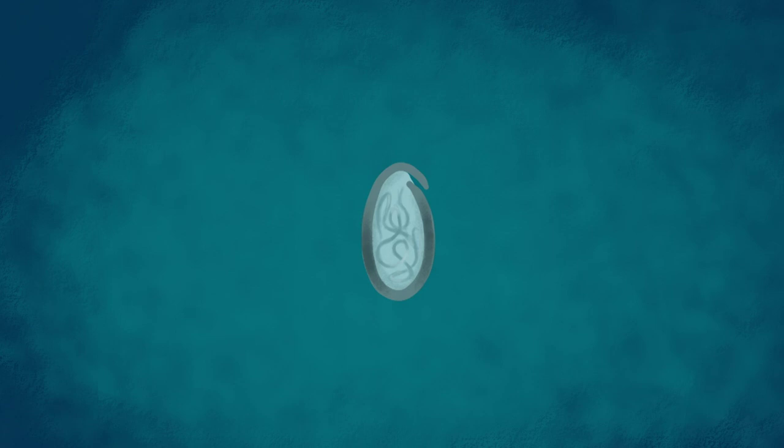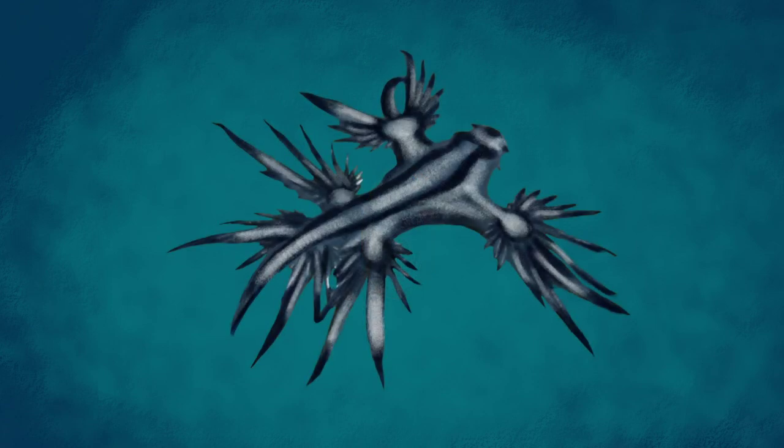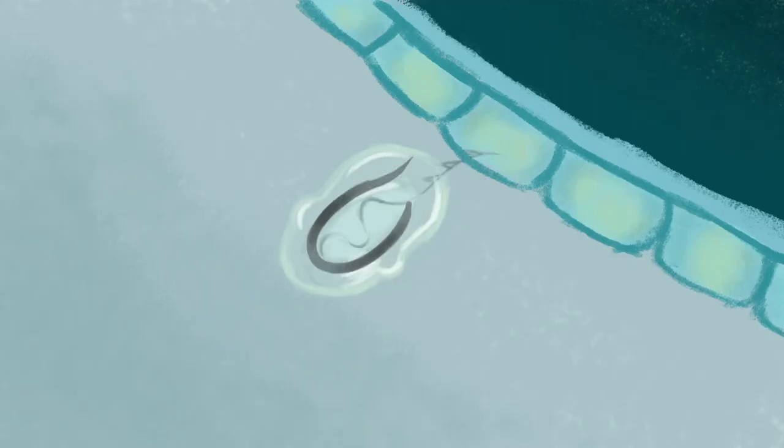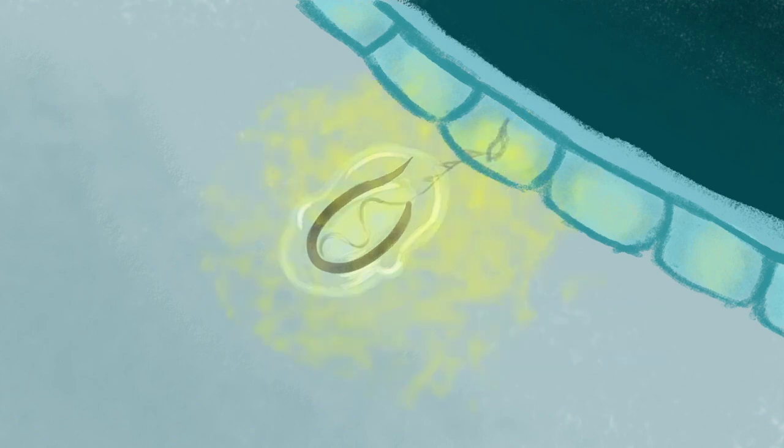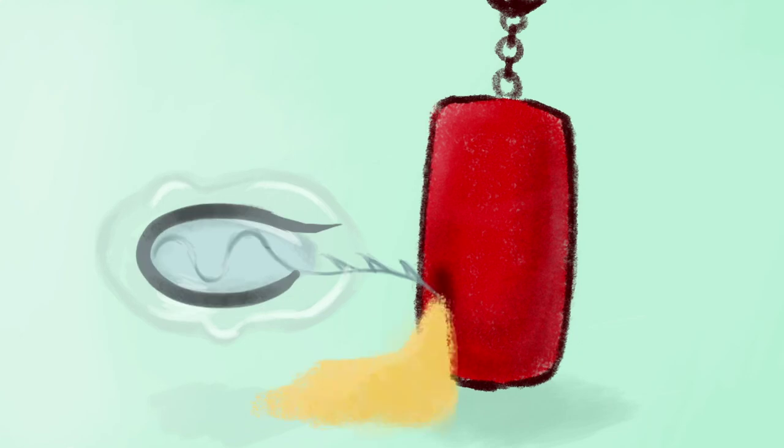The nudibranch does not completely digest the stinging capsules. Instead, the nudibranch keeps them intact and stores them for long periods of time. If the mucus doesn't prevent the stinging capsules from going off, the nudibranch also has hard discs lining its gut to release spindles to absorb the sting. These spindles act as a biological sandbag to cushion the blow.